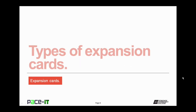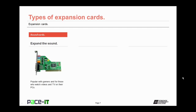Now let's briefly touch on different types of Expansion Cards. We're going to begin with Sound Cards. They expand the sound capabilities of your PC. They're popular with gamers and those who watch videos or television on their PCs. You can go from mono sound to stereo sound to surround sound with a sound card.